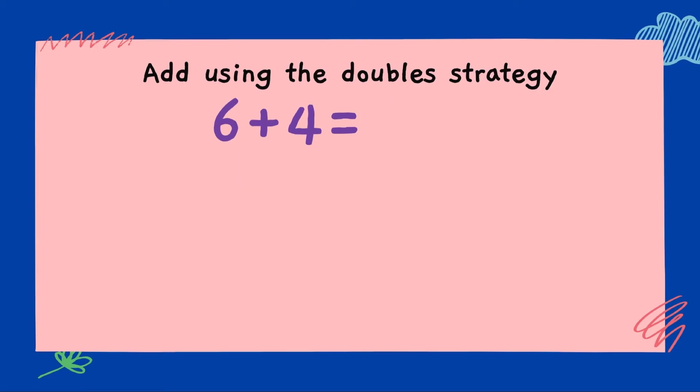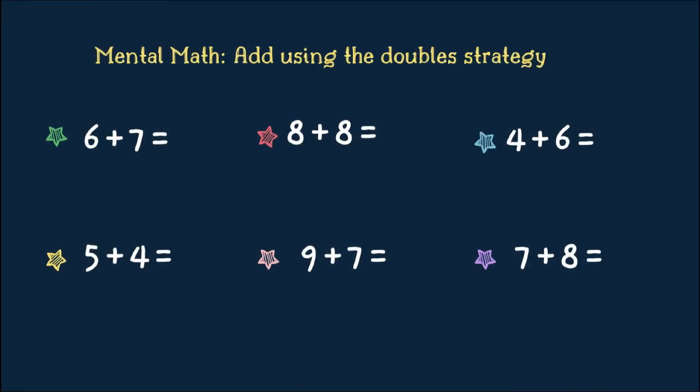Next one. 6 plus 4. 4 is the smaller number and 6 is the greater number. Let's split the number 6. We split it into 4 and 2. What's double 4? Double 4 is 8. 8 plus 2? 10. Now, using our double strategy to add, let's do some mental math.